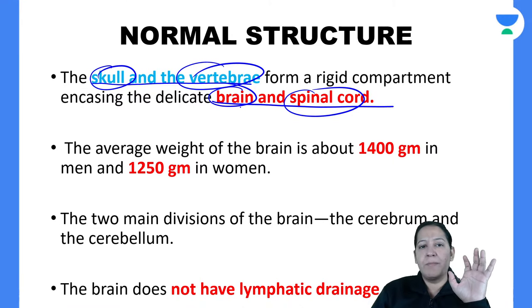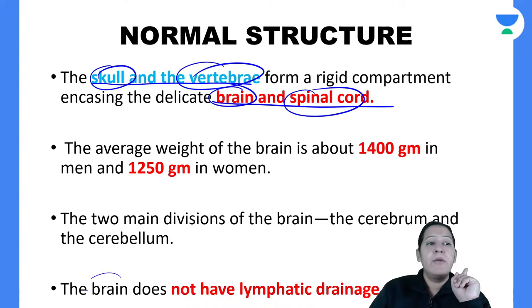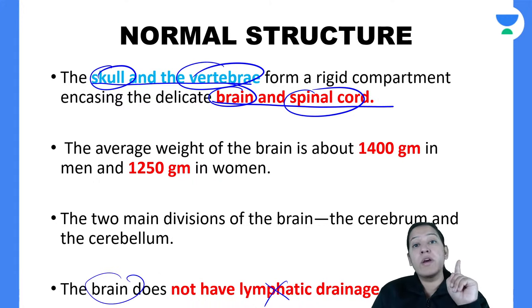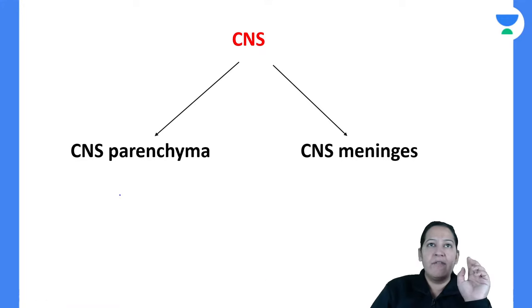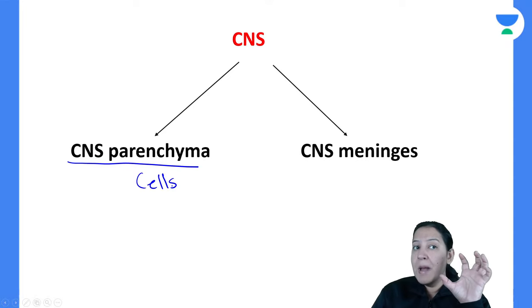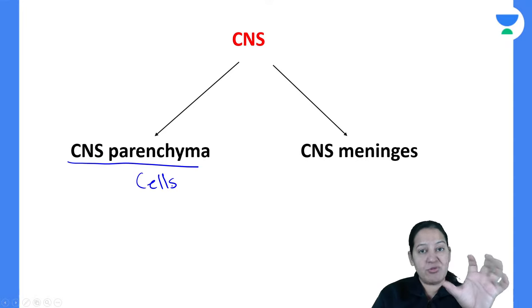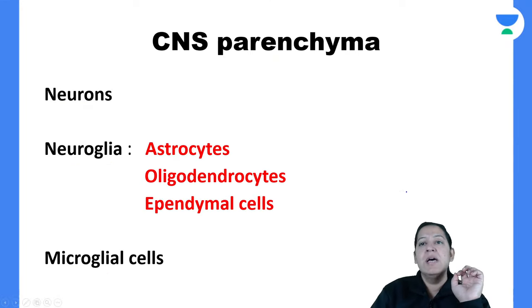One important fact: the brain does not have lymphatics. It is the only organ in the human body without lymphatics. The CNS has two parts — the parenchyma, which constitutes the structure of the brain and spinal cord, and the meninges, which are the three coverings.